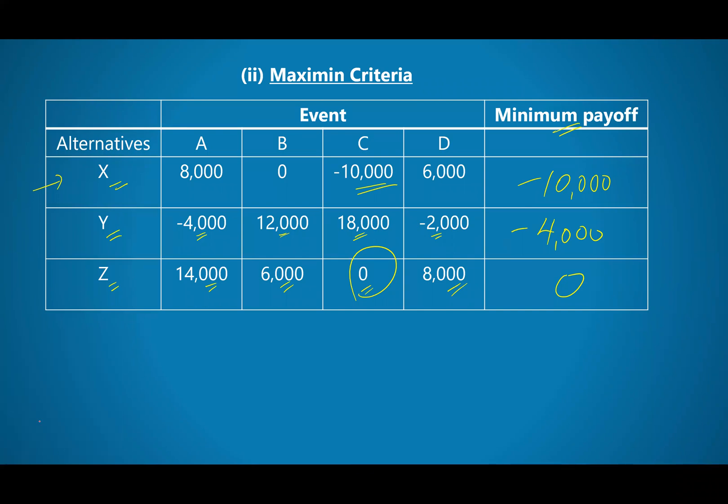Perfect. So Z would be the maximum of the minimum. I'm actually supposed to indicate, change this one here. Supposed to be maximin. Forgive me for the mistake there. Maximin, because we are saying we need the maximum of the minimum. So the maximum of the minimum is alternative Z.